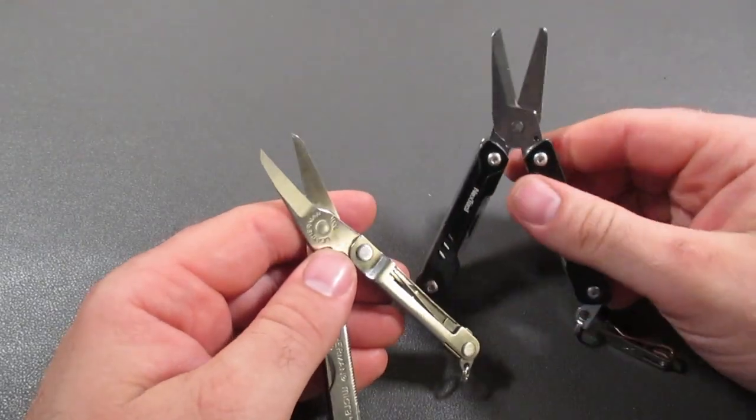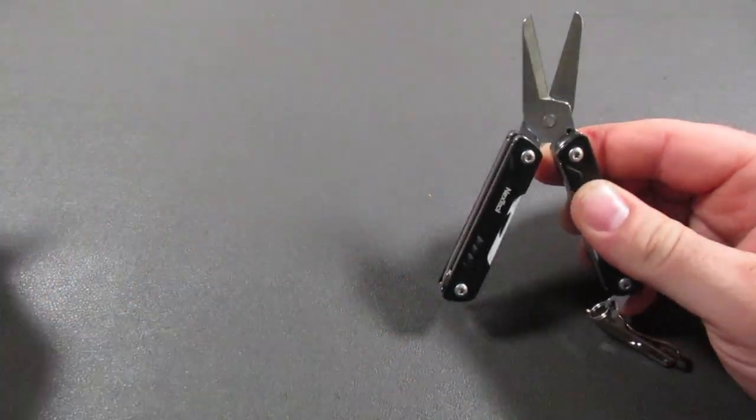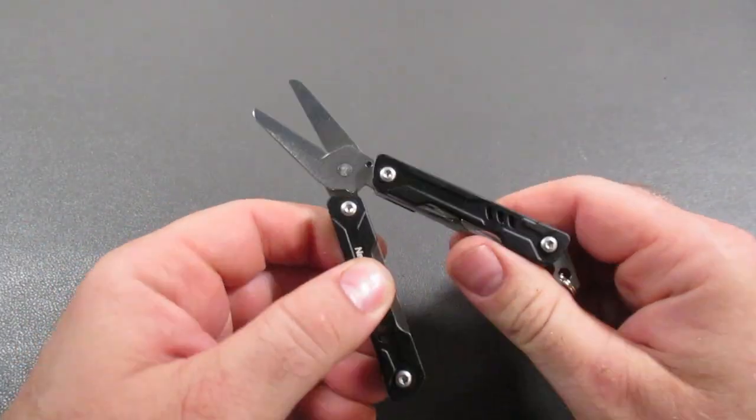So I really like the Mini Sailor. I do like the Micra still, but I have to say that for heavier duty tasks, cutting twine and rope.